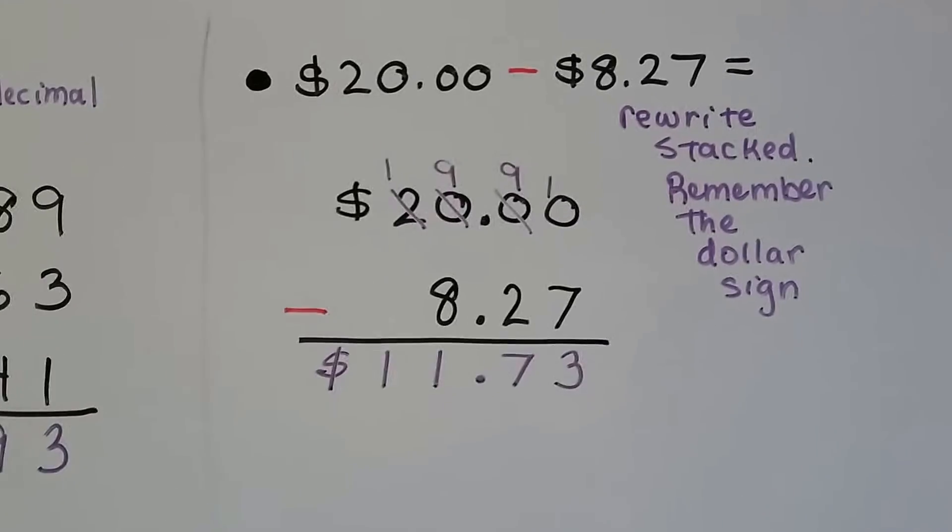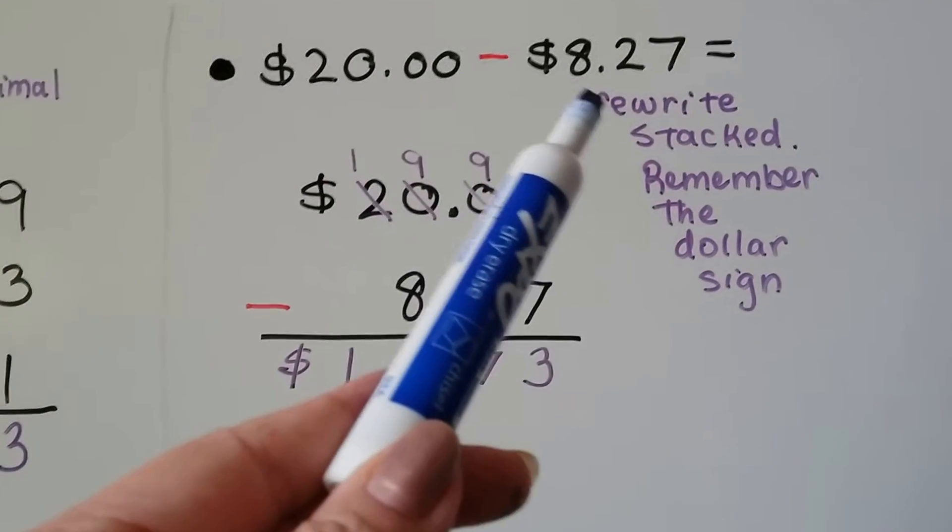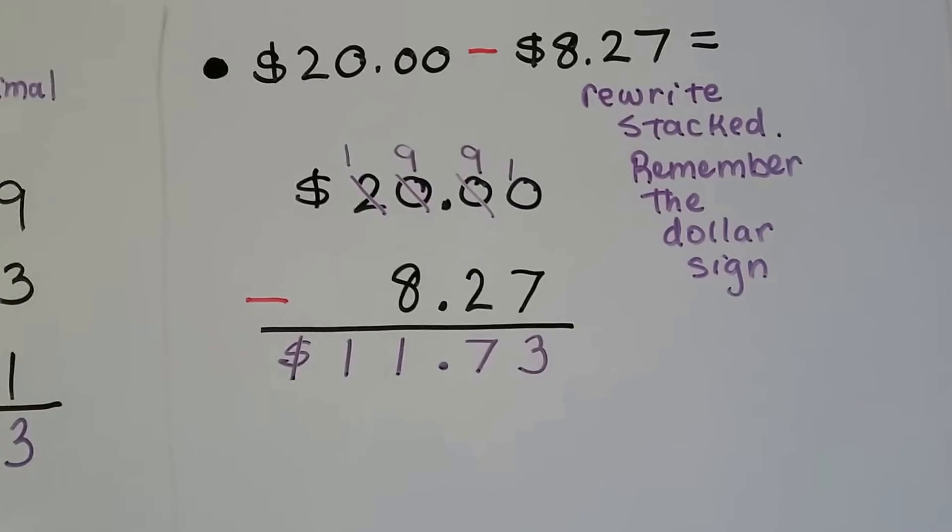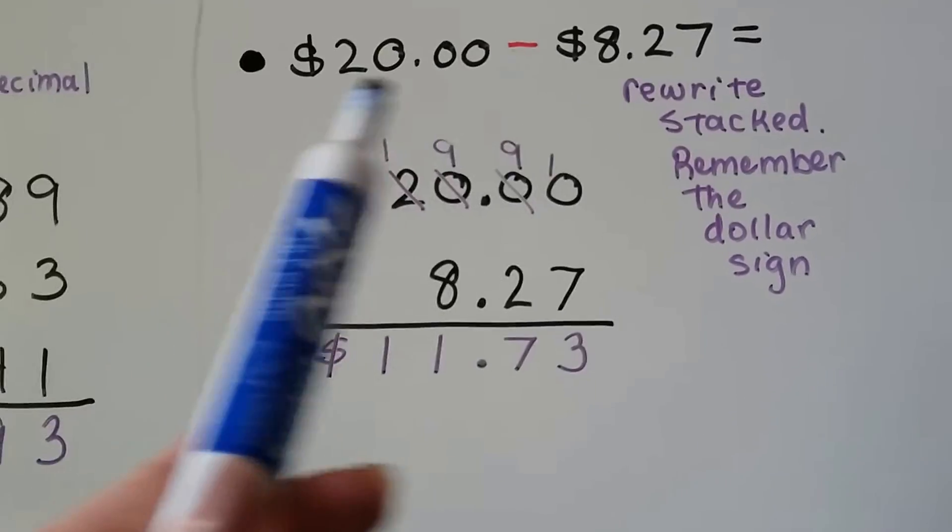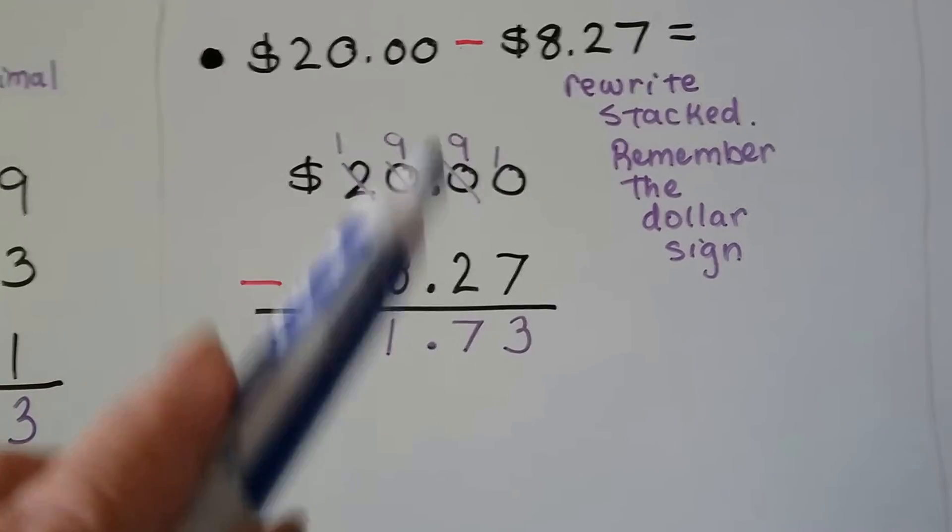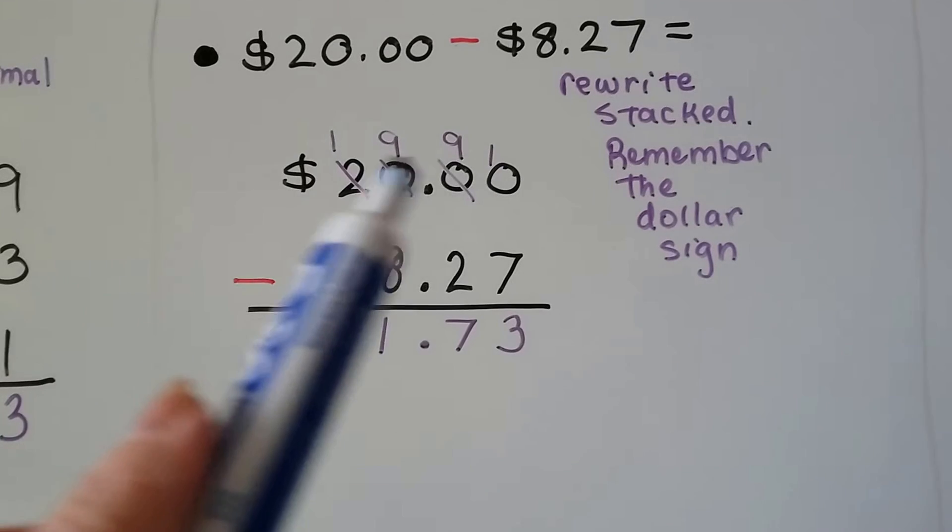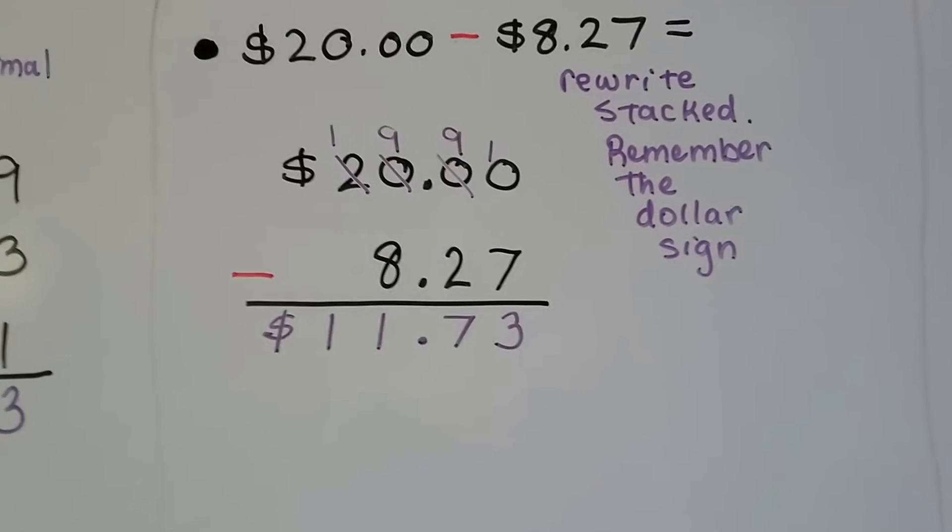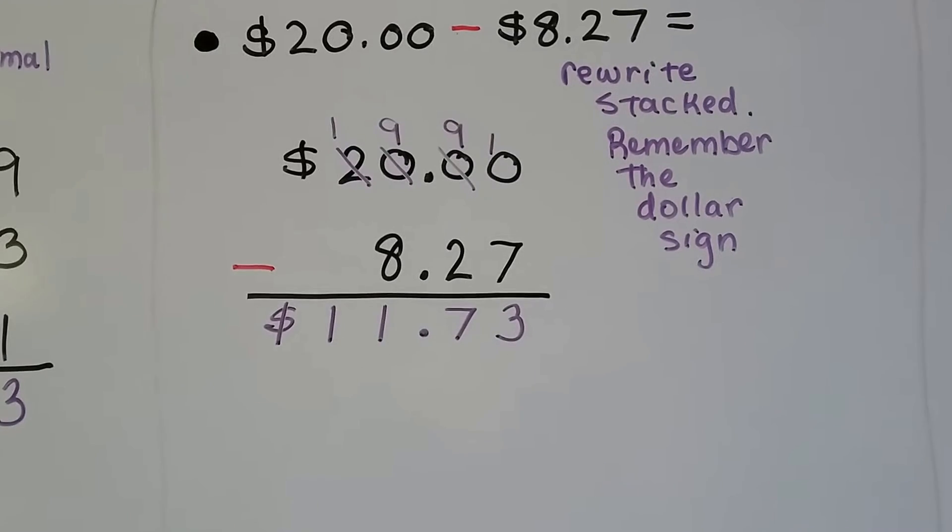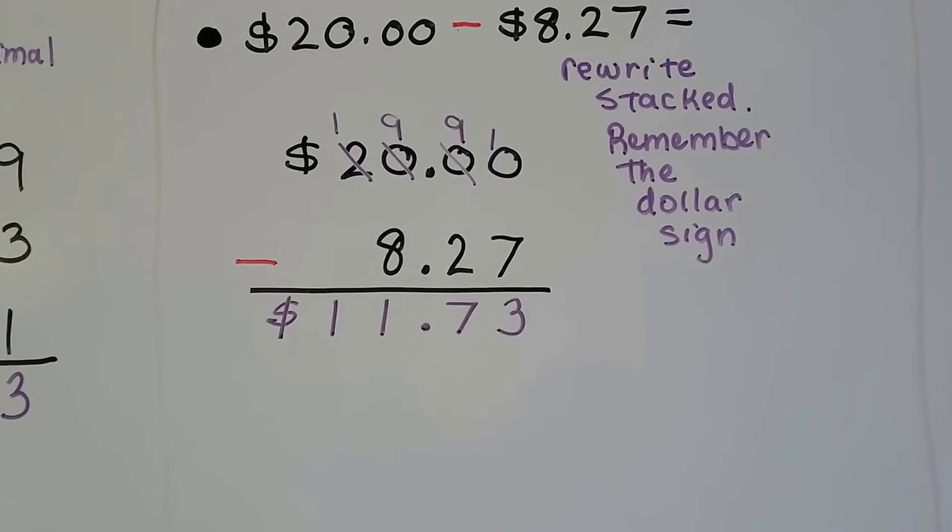Even subtracting $8.27 from $20, we just rewrite this as stacked vertically with the decimals lined up and remember the dollar sign and we would do it just as if it were whole numbers, with regrouping.